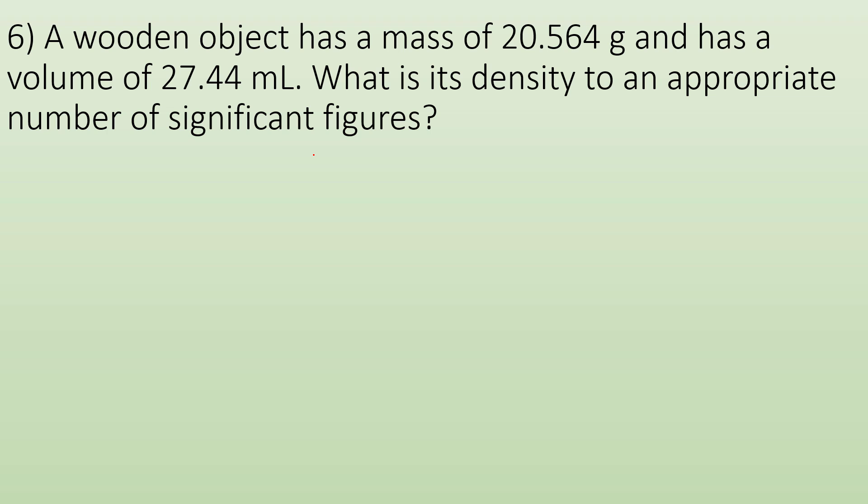A wooden object has a mass of that many grams and has a volume of that many milliliters. What is its density to an appropriate number of sig figs? So for density, we know it's going to be mass over volume. So we plug it in. We got 20.564 grams divided by 27.44 milliliters. So for these two options, we got to go, how many sig figs are in my numbers? Well, there's five sig figs in that top number and four in that bottom number. So I have to round my final answer to just four sig figs.